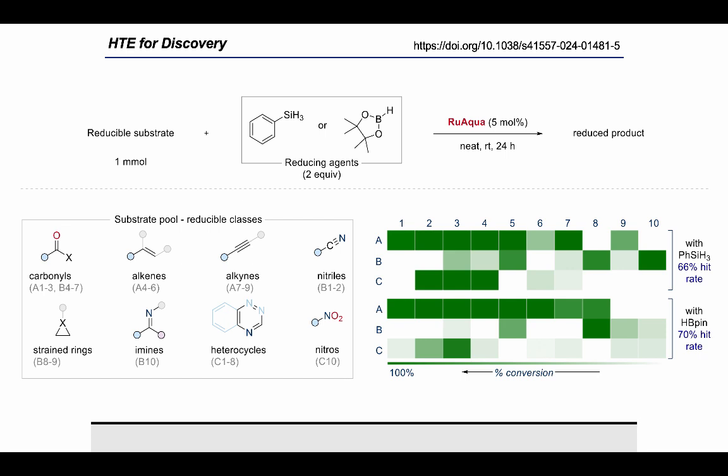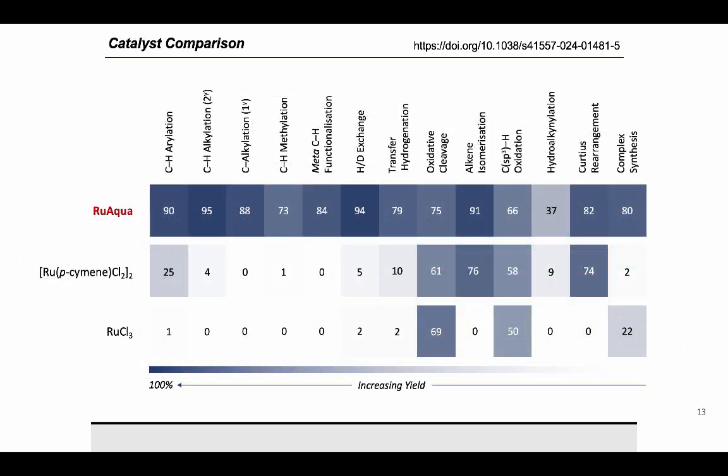With phenylsilane, we got a 66 percent hit rate, and with pinacol borane we got a 70 percent hit rate. One cool thing about this is that we've actually already found reactions that have never been reported with ruthenium before, so we've already found some new chemistry using this method.